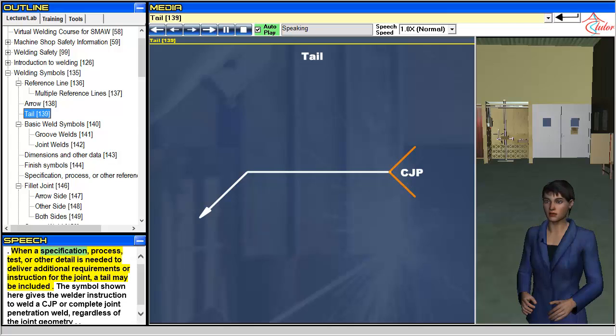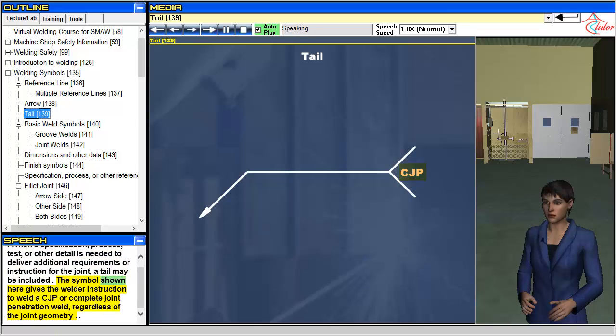When a specification, process, test, or other detail is needed to deliver additional requirements or instruction for the joint, a tail may be included. The symbol shown here gives the welder instruction to weld a CJP or complete joint penetration weld, regardless of the joint geometry.